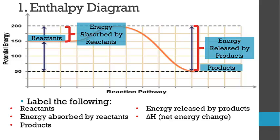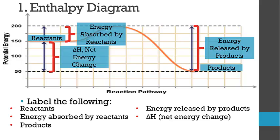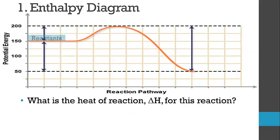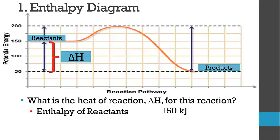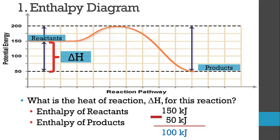Depending on which part is bigger, that dictates whether the reaction is overall endothermic or exothermic. To find the change in enthalpy, we look at the difference in enthalpy between the reactants and the products — that net energy change is the delta H. To find a numerical value, we compare the enthalpy of the reactants, which is 150 kilojoules, and the enthalpy of the products, which is 50 kilojoules. The difference is 100 kilojoules. This reaction releases heat because reactants start with higher energy and go to products with lower energy, so we apply a negative sign: delta H is negative 100 kilojoules.